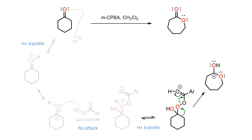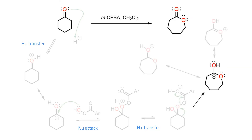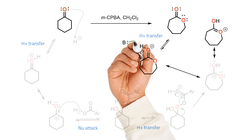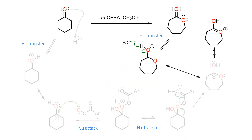This provides a resonance-stabilized oxonium ion and a molecule of carboxylic acid from the MCPBA. The stability of the oxonium ion is shown with the associated resonance structures. Finally, loss of a proton delivers the ester product, which in this case is a lactone.